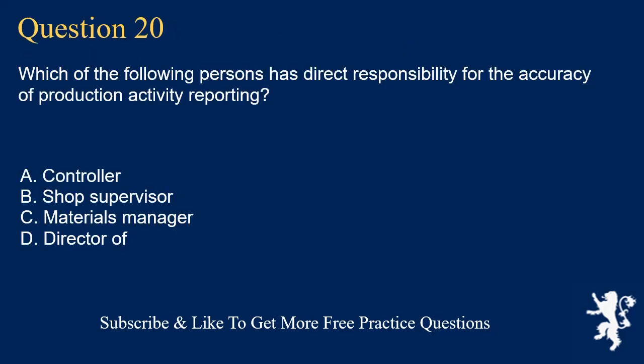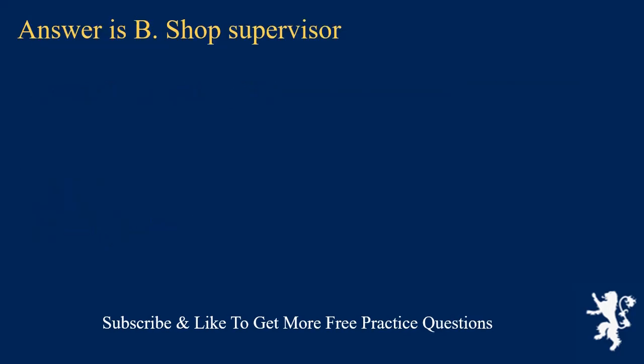Question 20. Which of the following persons has direct responsibility for the accuracy of production activity reporting? A. Controller. B. Shop Supervisor. C. Materials Manager. D. Director of Manufacturing. Answer is B. Shop Supervisor.